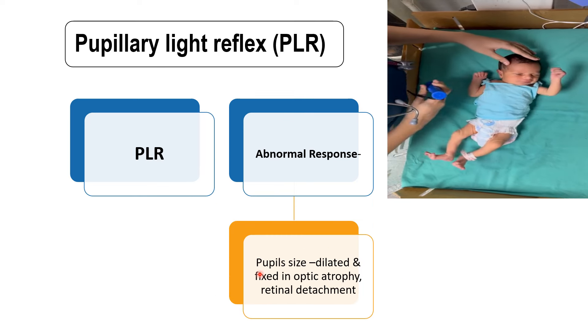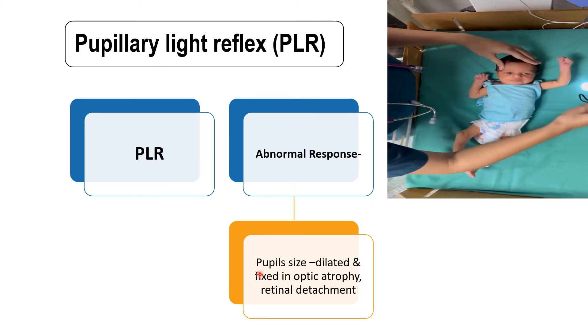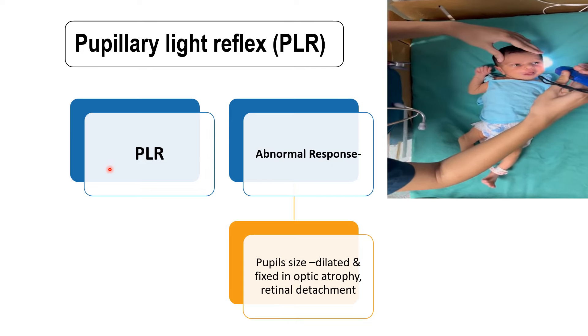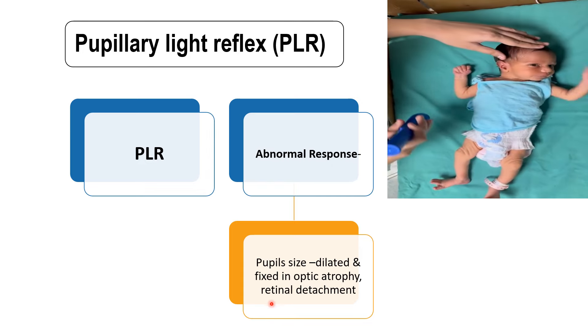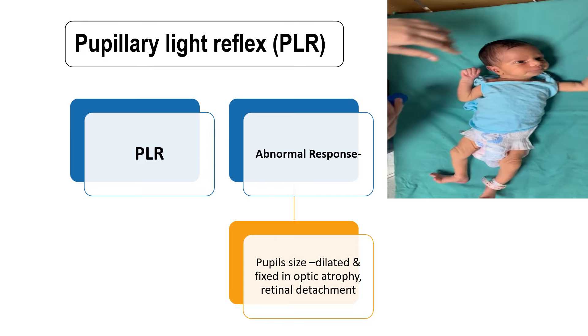If the pupil is dilated and fixed when you are shining the light, that means the baby is having either optic atrophy or retinal detachment.